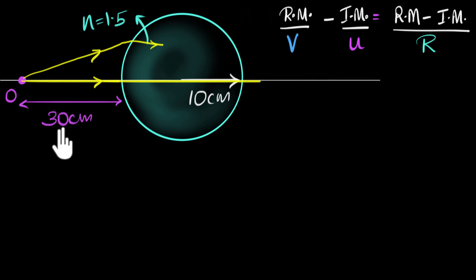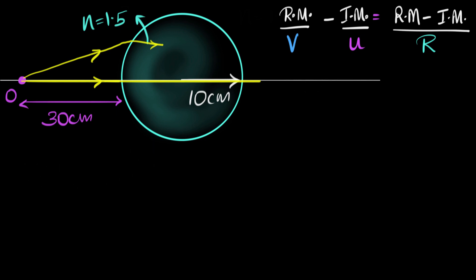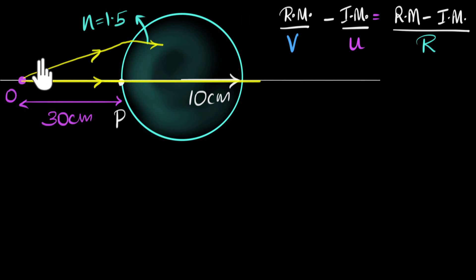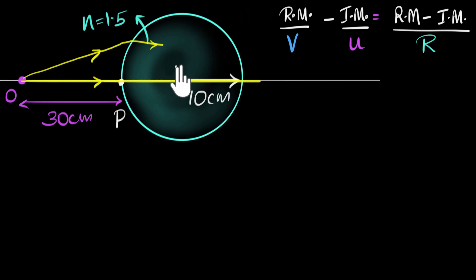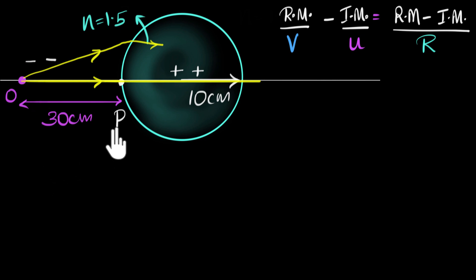Let's see if we have all the data and just plug it in. Whenever we are substituting we have to use signs. The sign convention we always choose is we take the pole as the origin, and we choose the incident direction to be positive. The right side is positive in this example, so all positions on the right side are positive and all positions on the left side are negative.